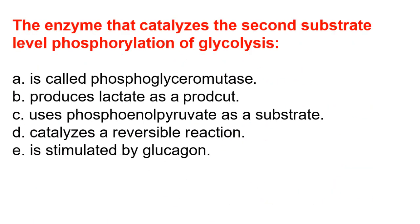The next question: the enzyme that catalyzes the second substrate-level phosphorylation of glycolysis. A, is called phosphoglycerol mutase. B, produces lactate as a product. C, uses phosphoenolpyruvate as a substrate. D, catalyzes an irreversible reaction. E, is stimulated by glucagon. The answer is D, which catalyzes an irreversible reaction.